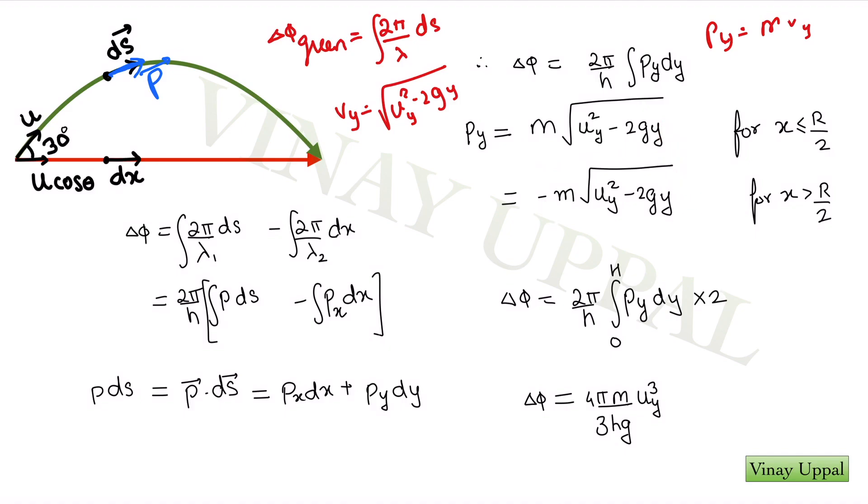Now, because the magnitudes are same and the parabola is symmetrical, instead of integrating piecewise from 0 to H and then back during the descent, what I will do is I will only integrate during the ascent and multiply it by 2. I will have Δφ is 2π/h times integral py dy times 2 from 0 to capital H. This is the y coordinate and you will get this quantity. I will leave the calculation up to you.